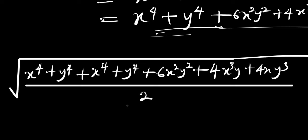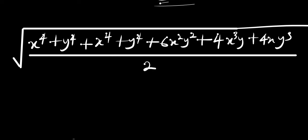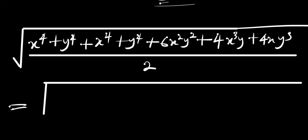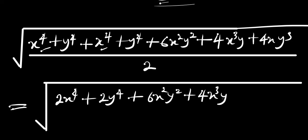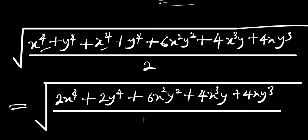So what do we do? Let's collect like terms and add up. This will give us the square root of 2x power 4 plus 2y power 4 plus 6x squared y squared plus 4x cubed times y plus 4xy power 3, and everything here is divided by 2.